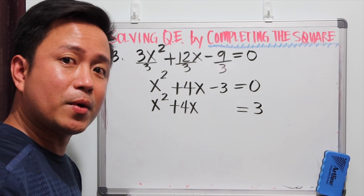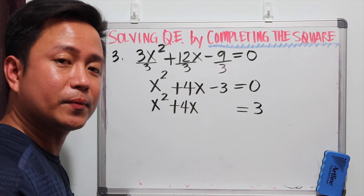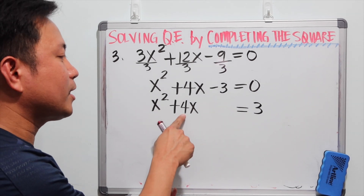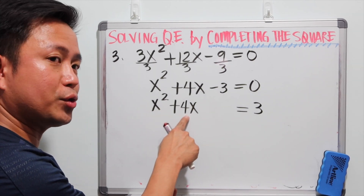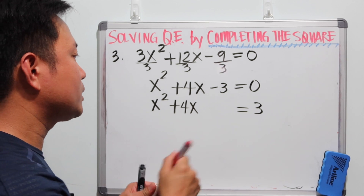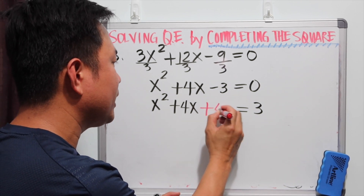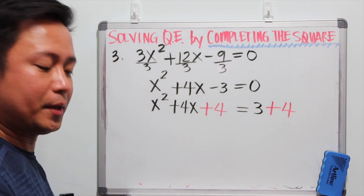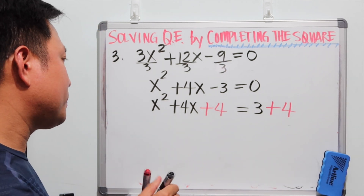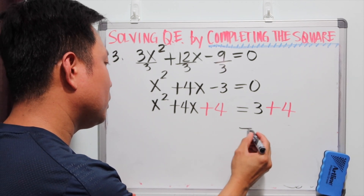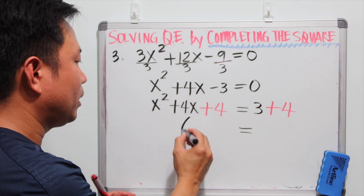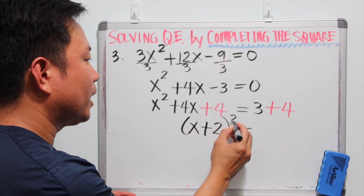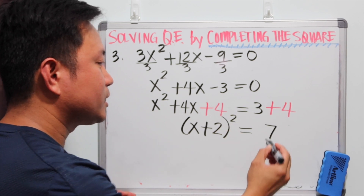What are we adding to both sides to make it a PST? We add 4, because we need to get half of 4, which is 2, and square it to get 4. So we add 4 to both the left and right sides to maintain equality. Since this is a PST, the left side is always a perfect square trinomial, which can be factored as x plus 2 to the second power, and the right side is 7.